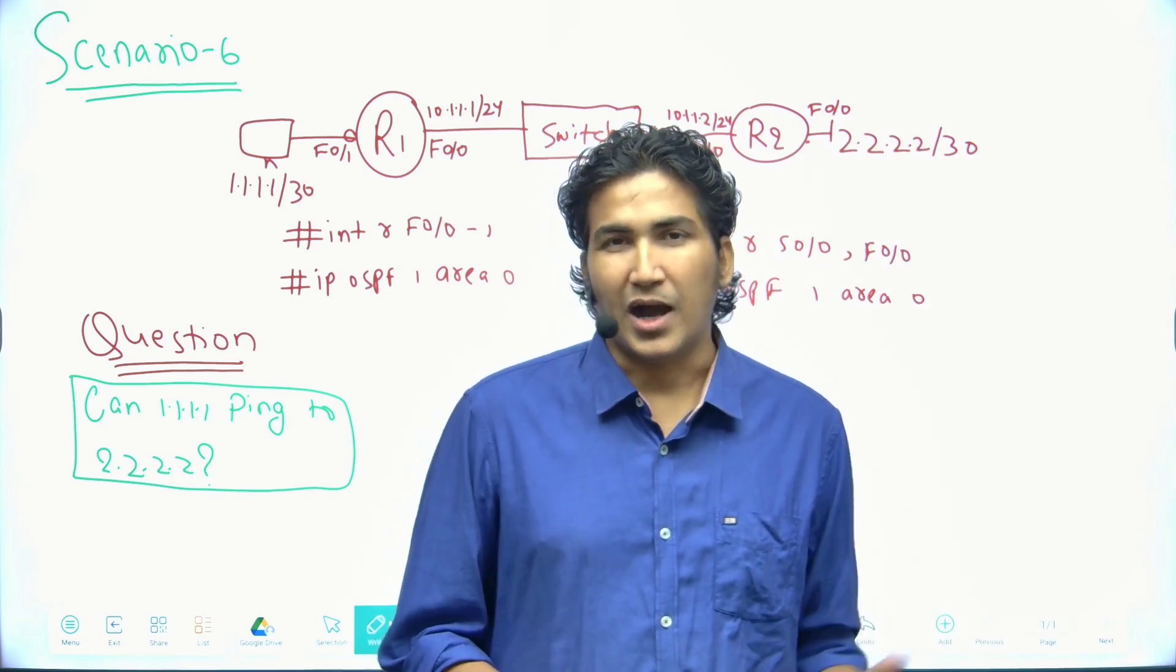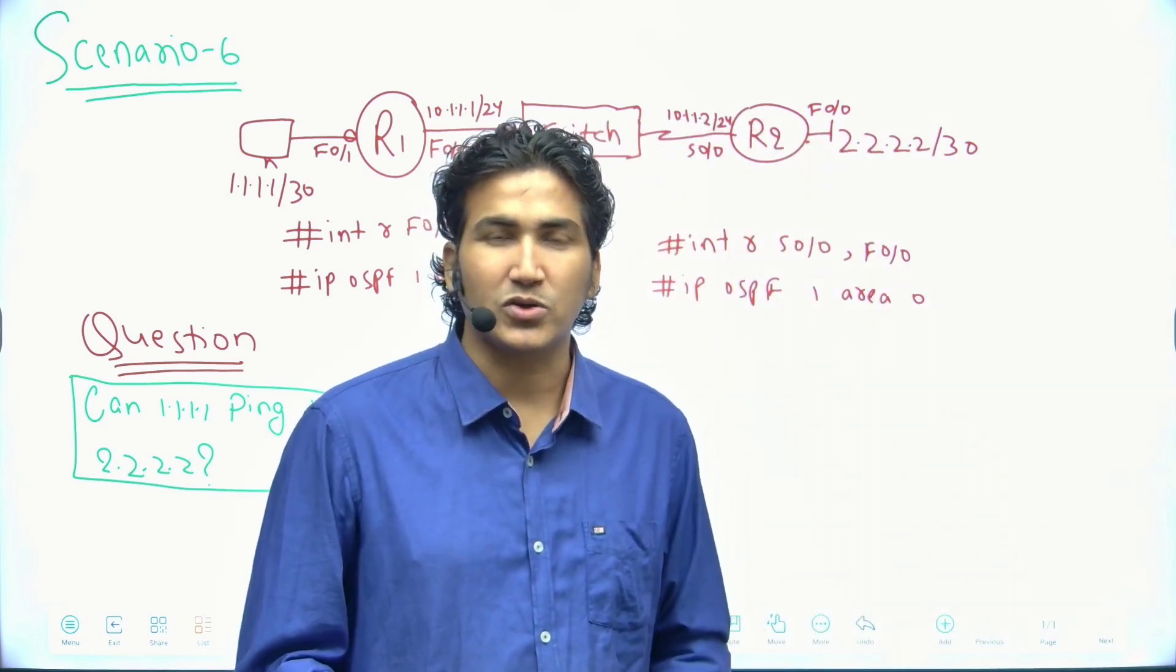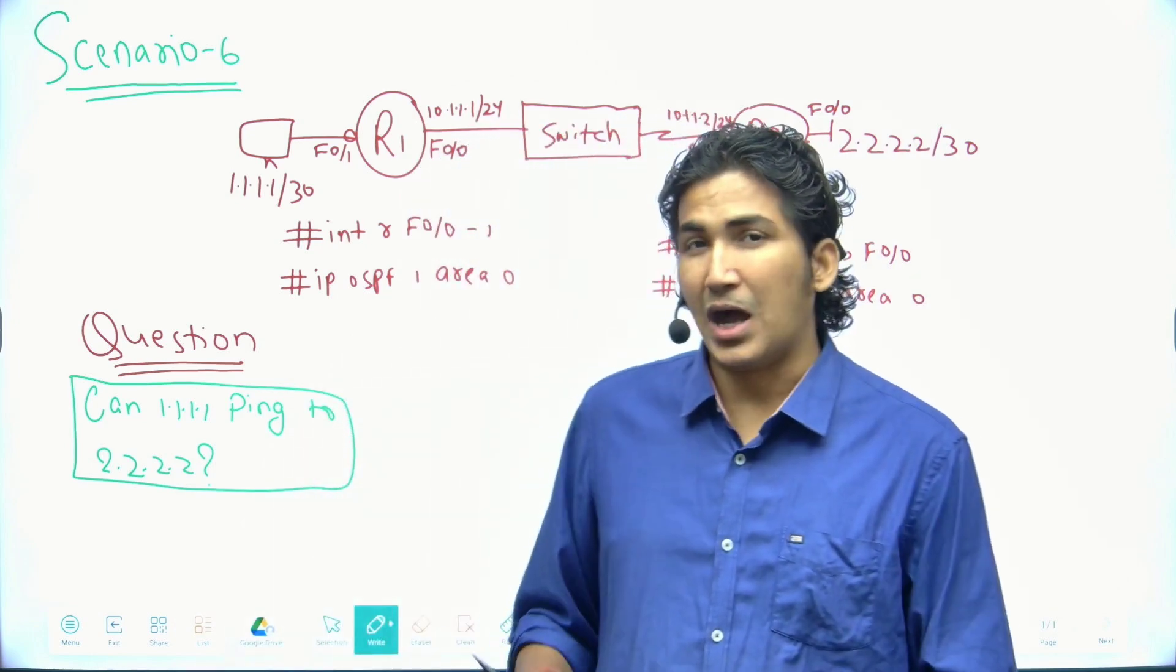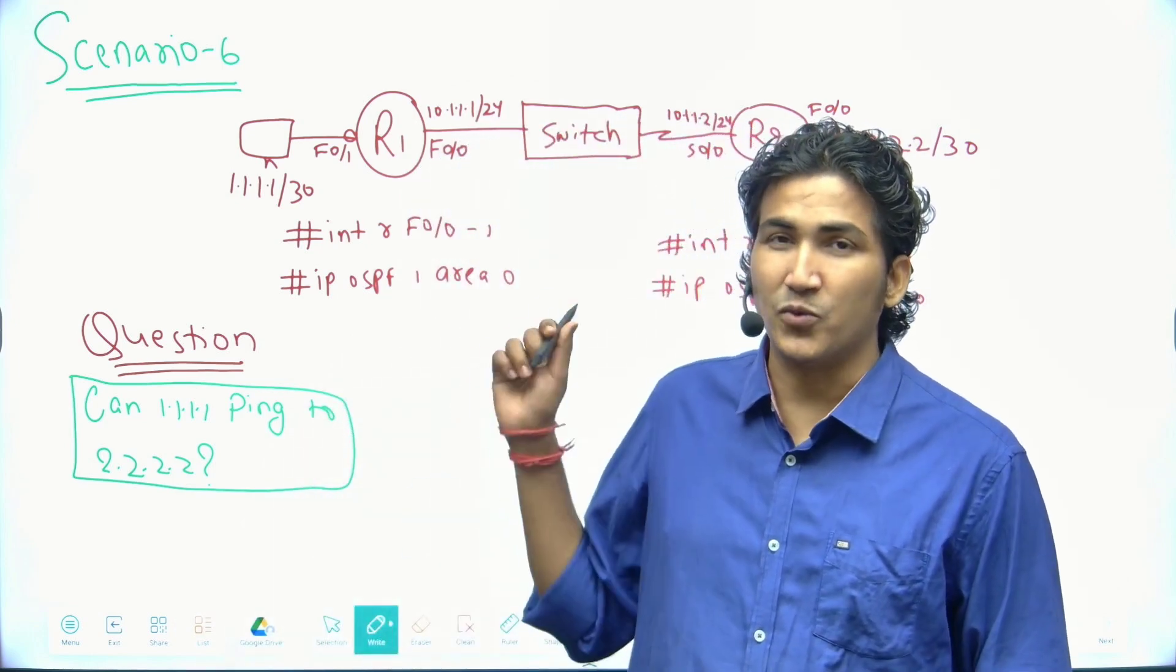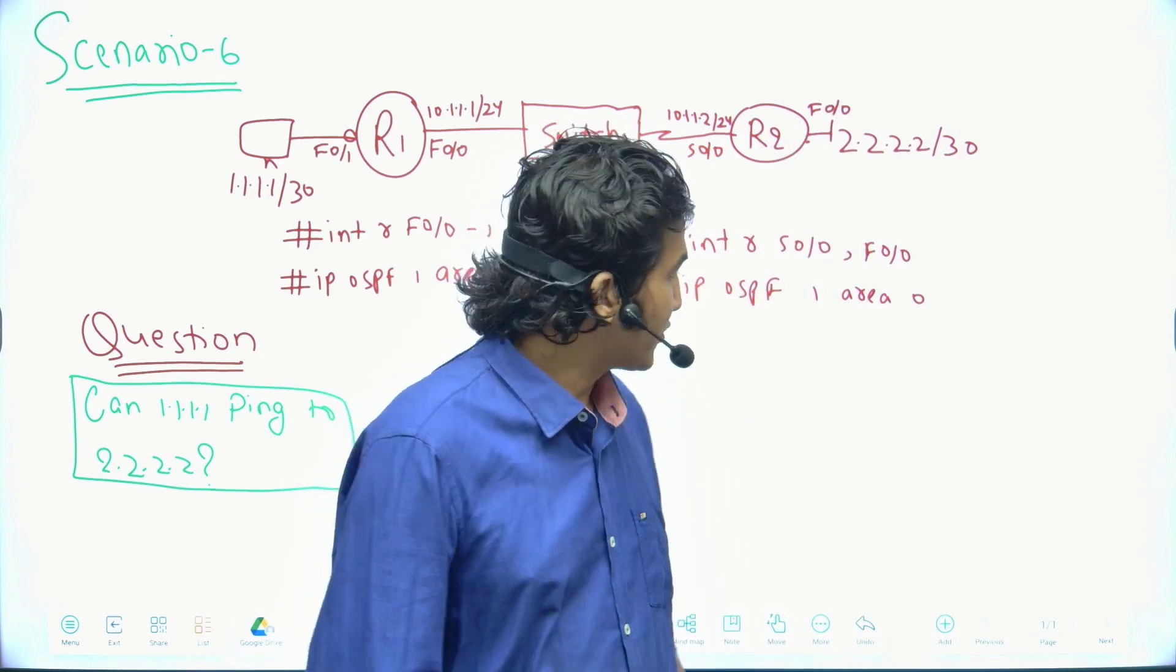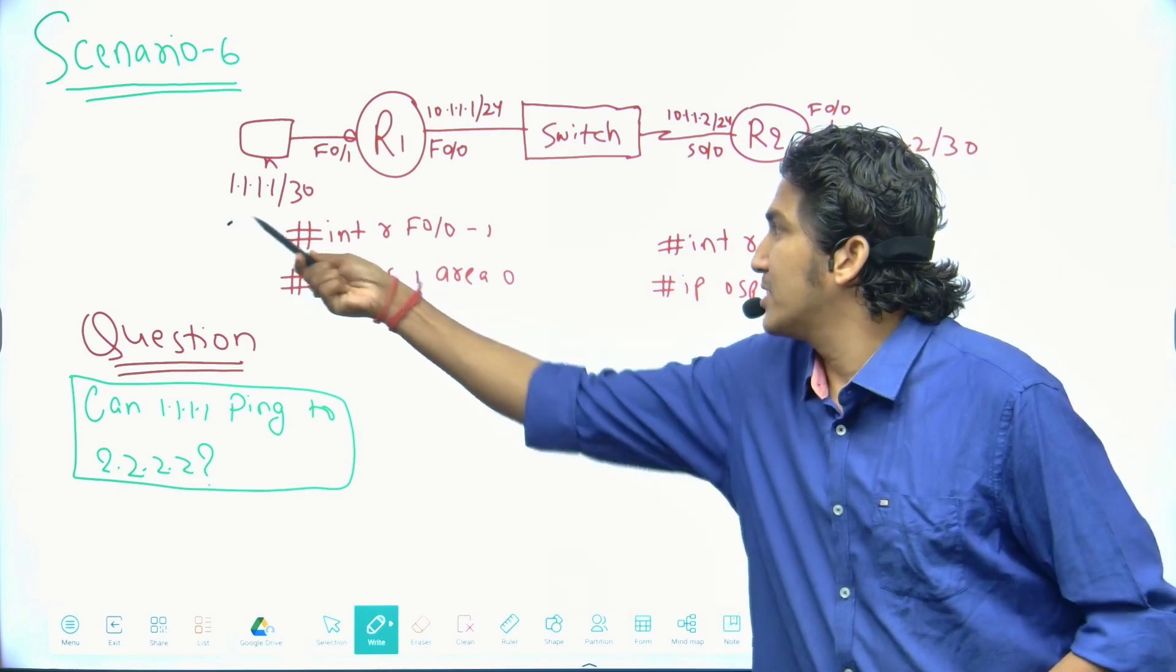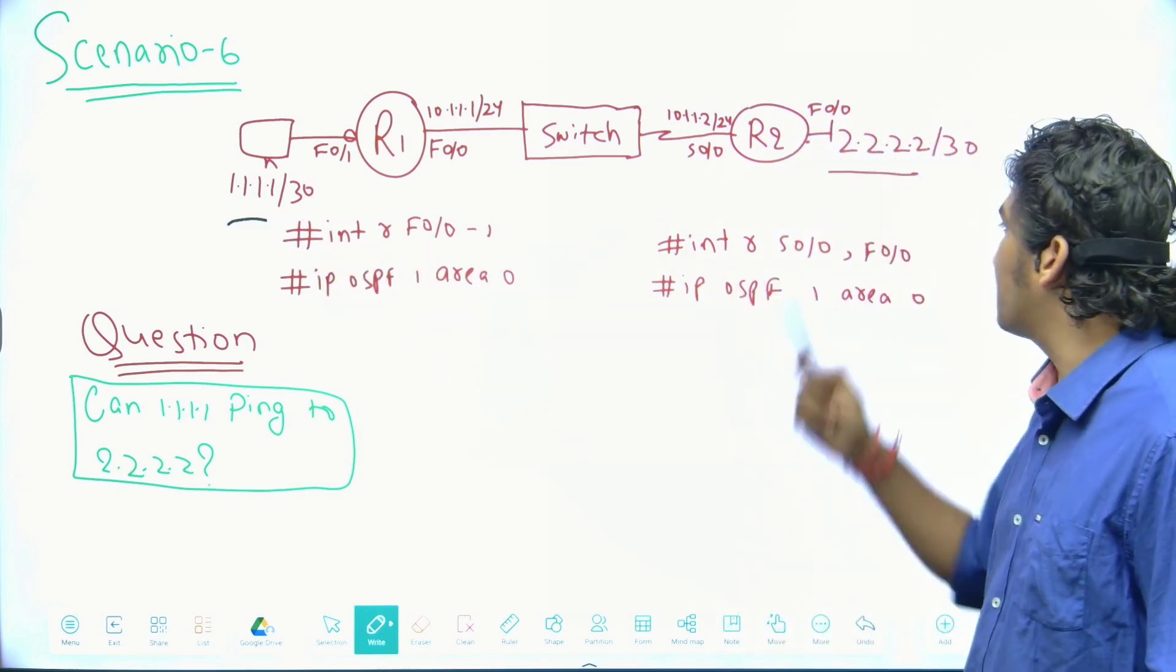R2 is connected with one PC with IP 2.2.2.2. And the question is: after enabling OSPF, can 1.1.1.1 and 2.2.2.2 communicate with each other? So tell me the answer in the comment section. What is your answer, yes or no? Can this PC communicate with this PC?